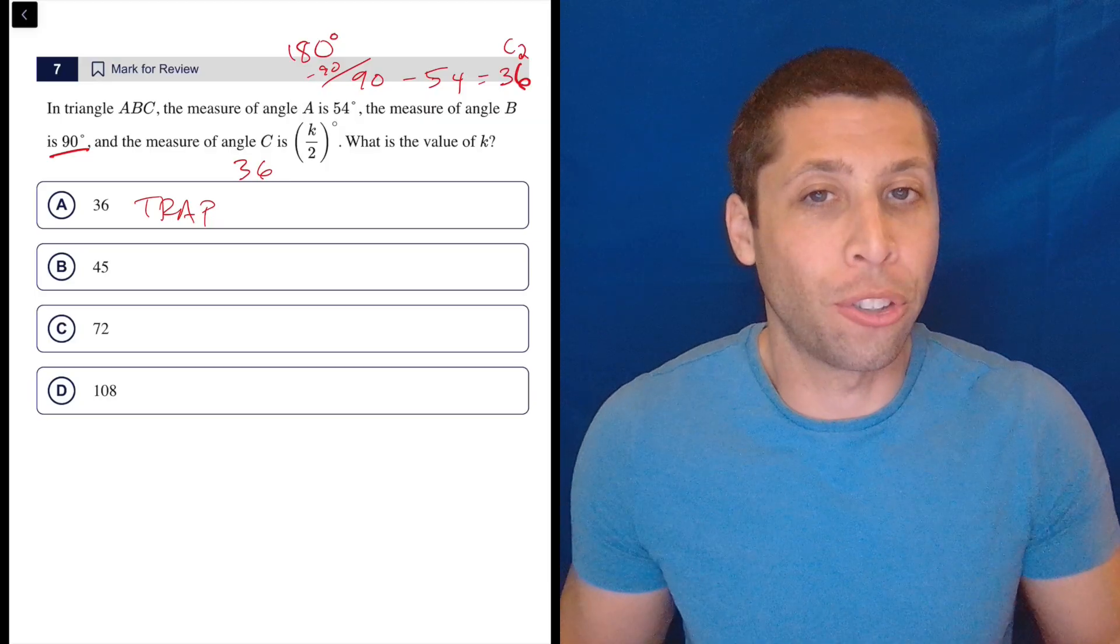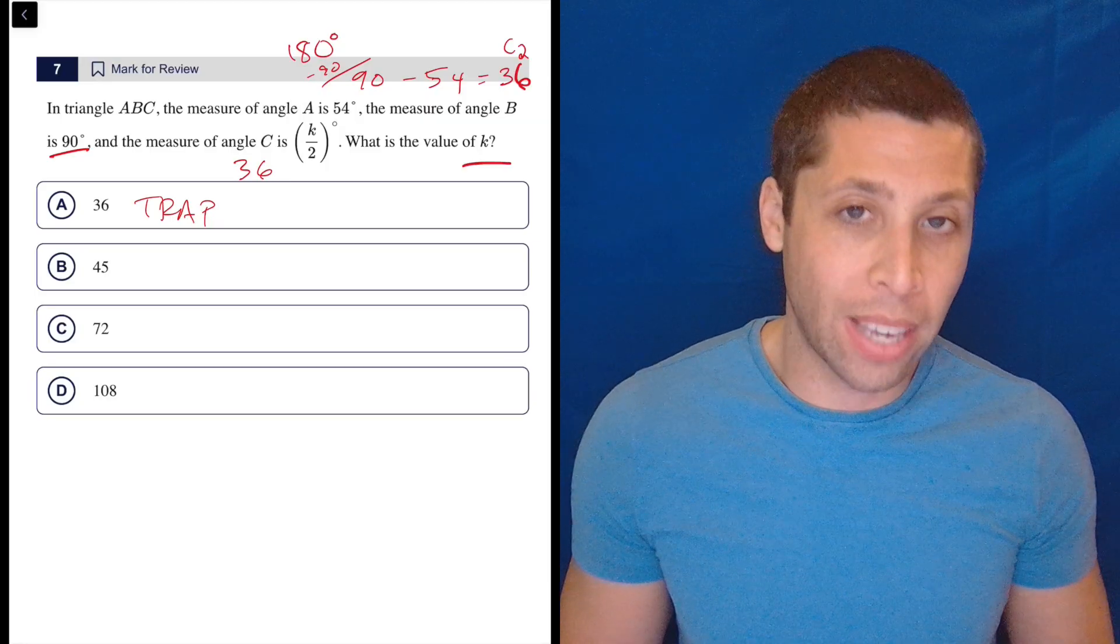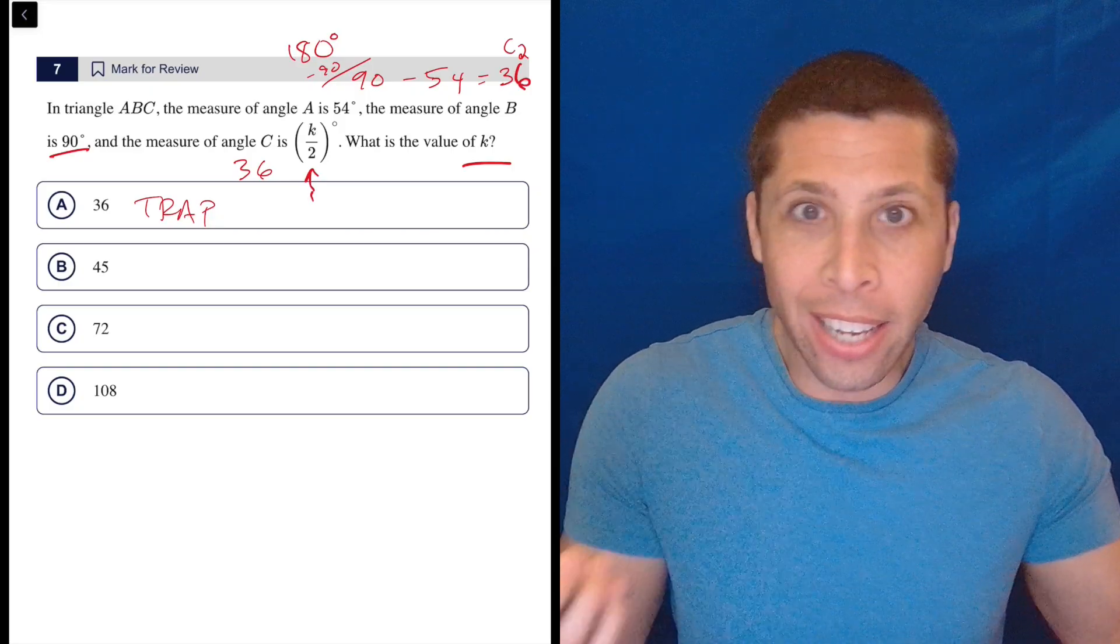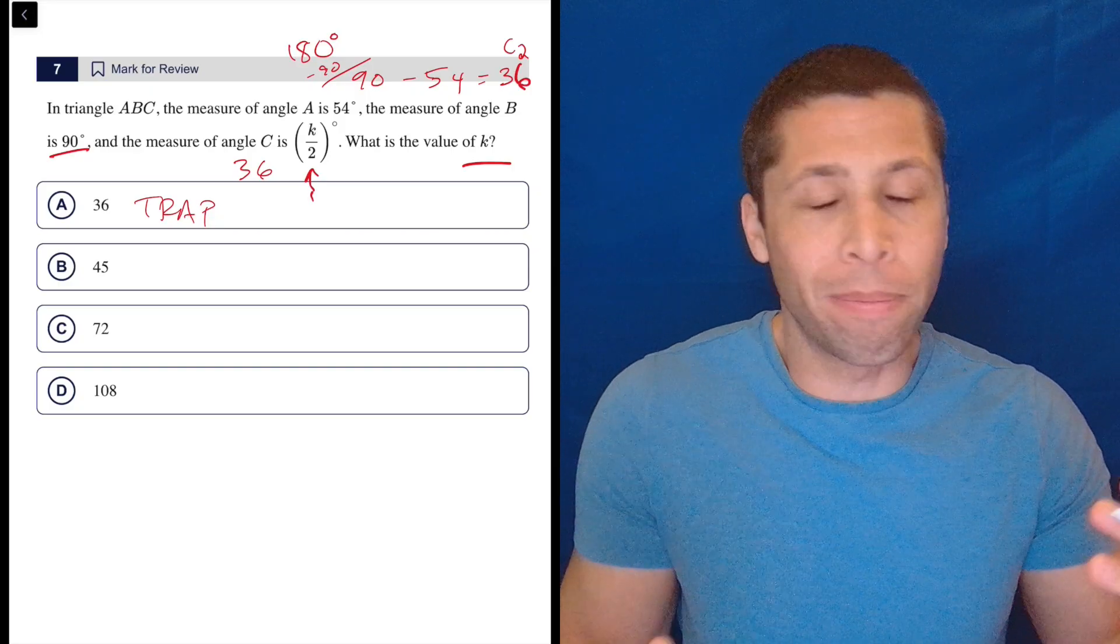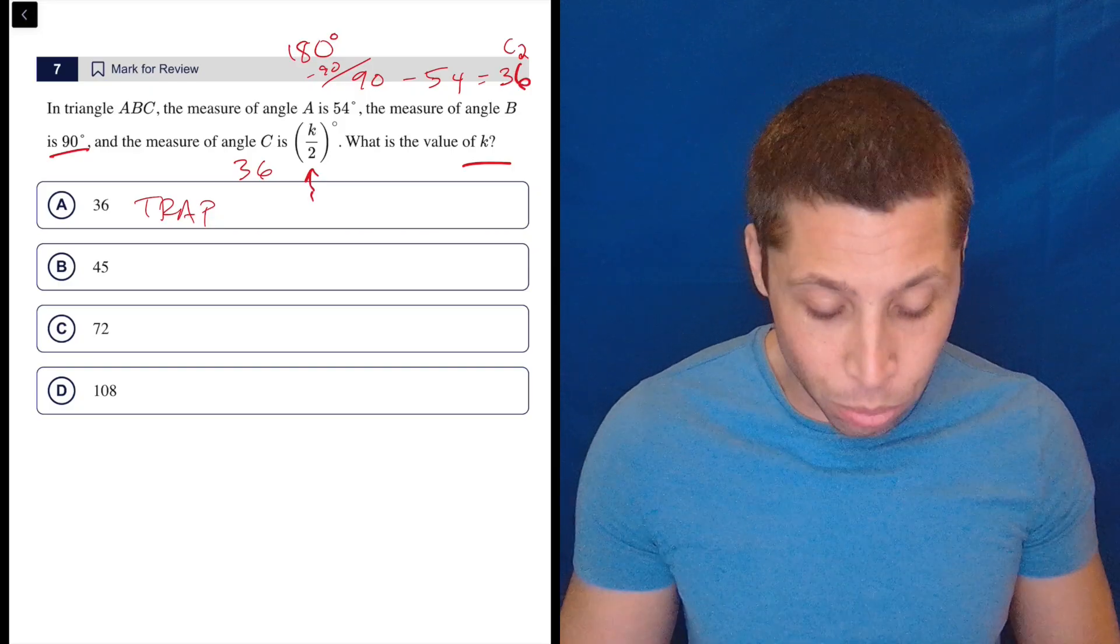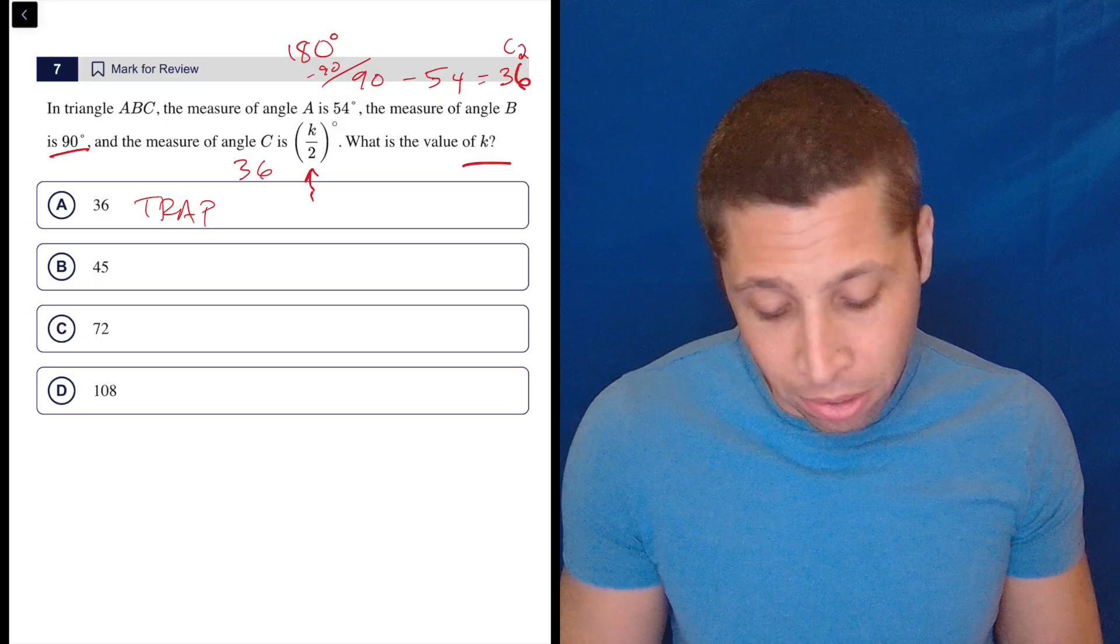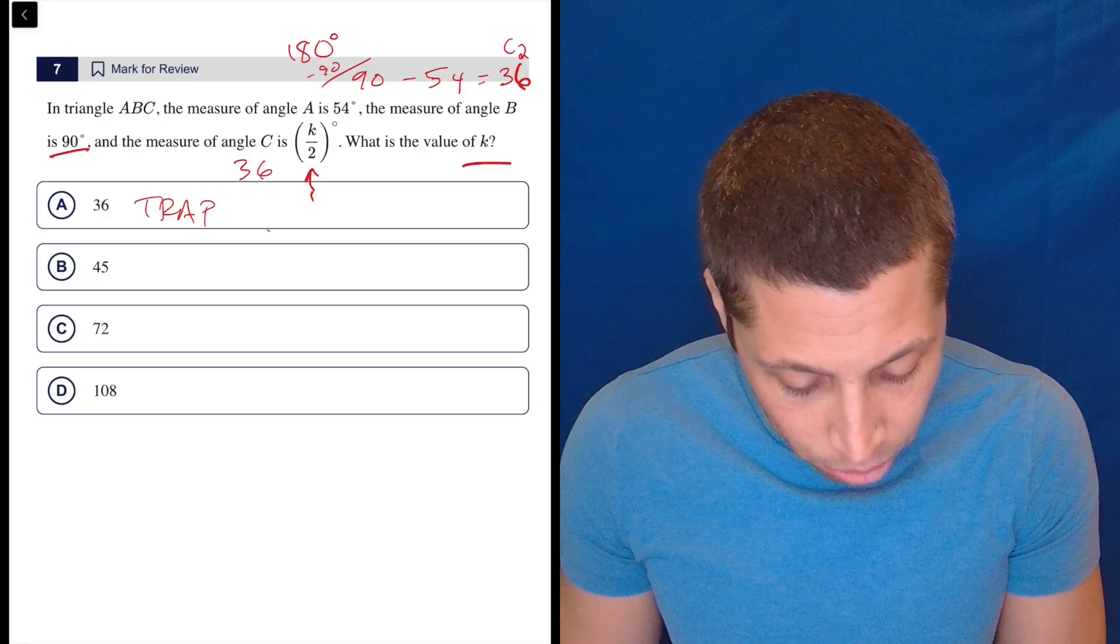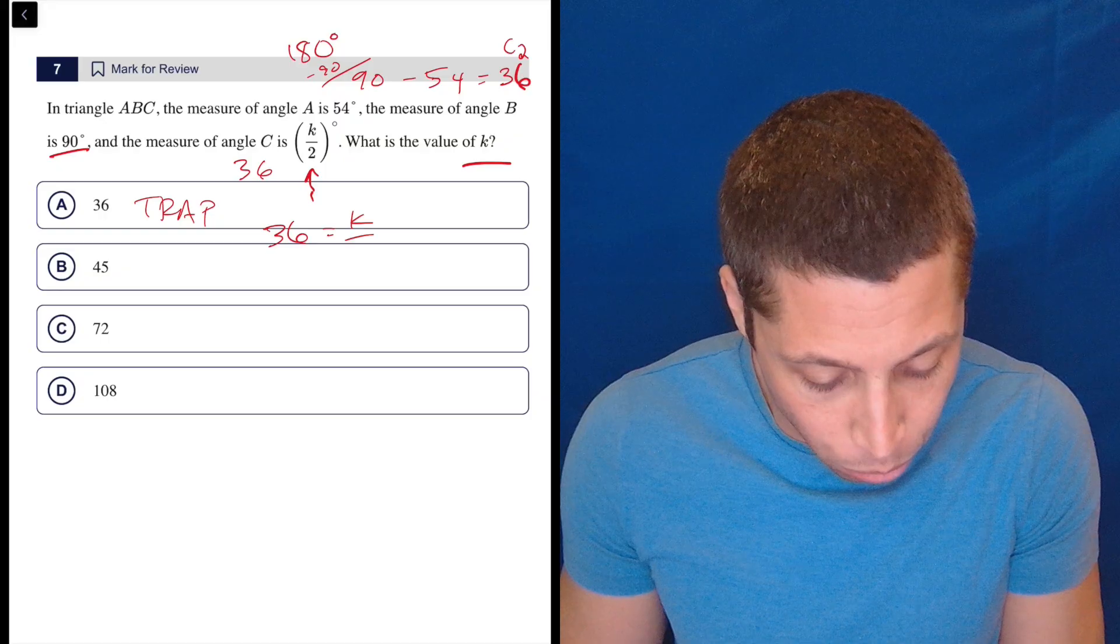But we haven't accomplished the mission. The mission is what's the value of K? And they purposely made the angle kind of convoluted compared to the thing we're solving for. So we have to do a little mini equation here: 36, let's do it down here, 36 is equal to K over 2.